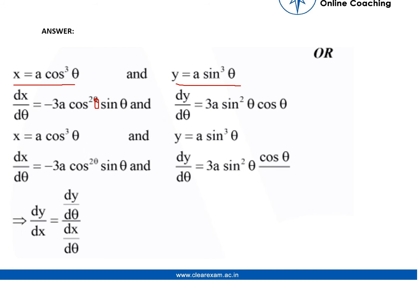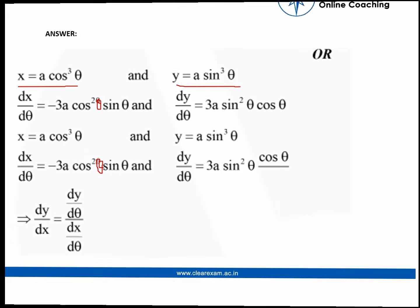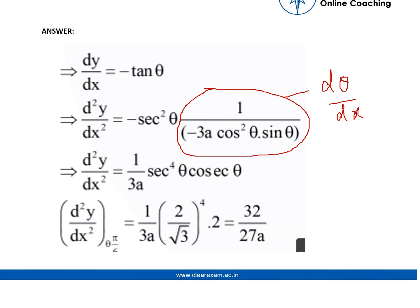Let's put theta over here also. Now we will be finding dy over dx. So dy over dx equals dy over dθ divided by dx over dθ. This equals minus tan theta. So we will differentiate it with respect to x.